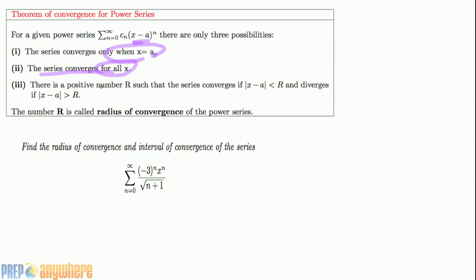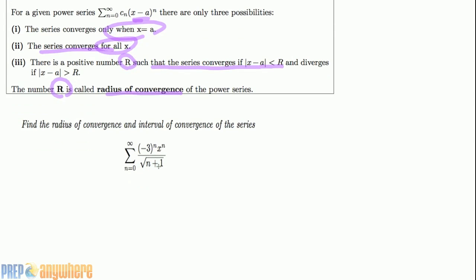There is a positive value r such that the series converges for |x - a| < r and diverges for |x - a| > r. We call this r the radius of convergence. Let's do an example: find the radius of convergence for this power series, and we consider the ratio test.